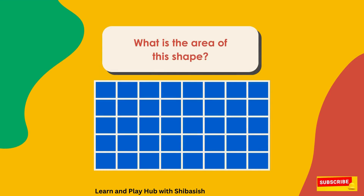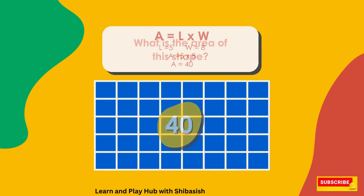What is the area of the shape? A equals L times W. L equals 5, W equals 8. A equals 5 times 8. A equals 40. The correct answer is option C: 40.